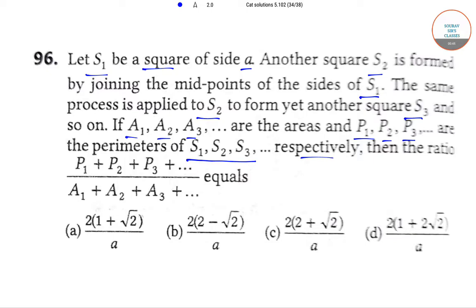So by the given condition in the question, area of S1 is equal to A squared and perimeter of S1 is equal to 4A.